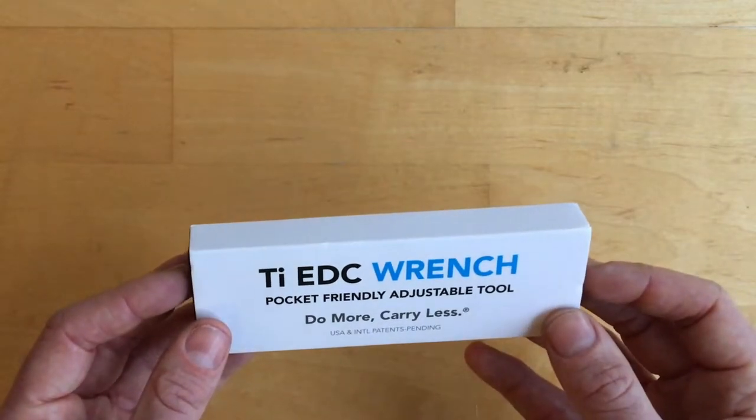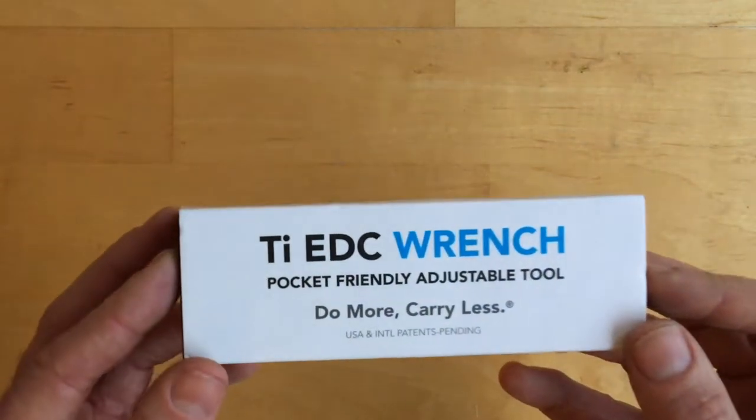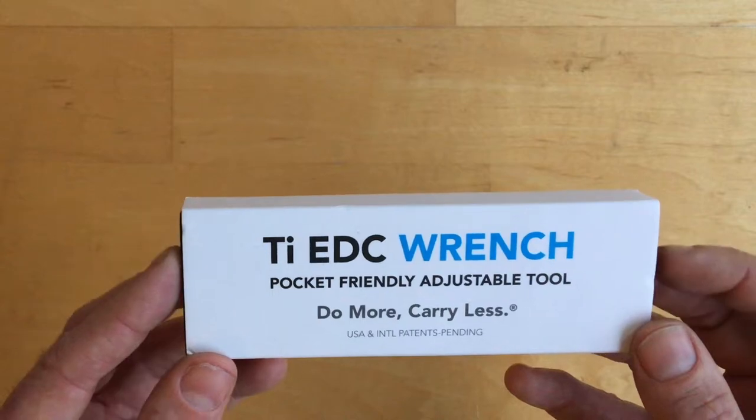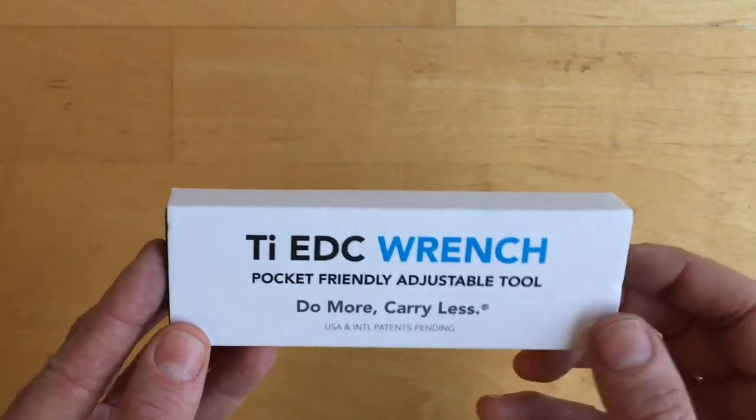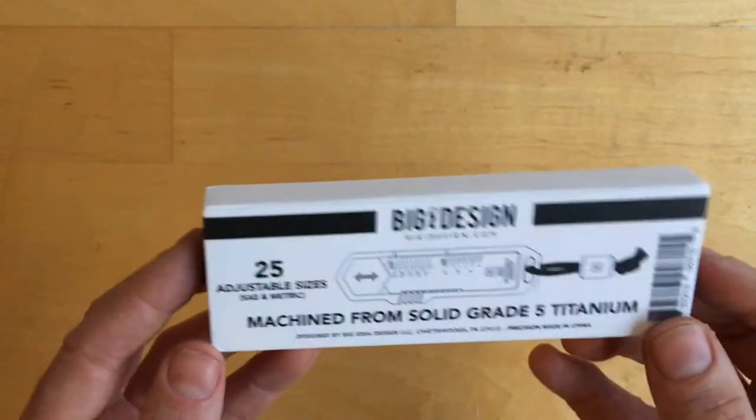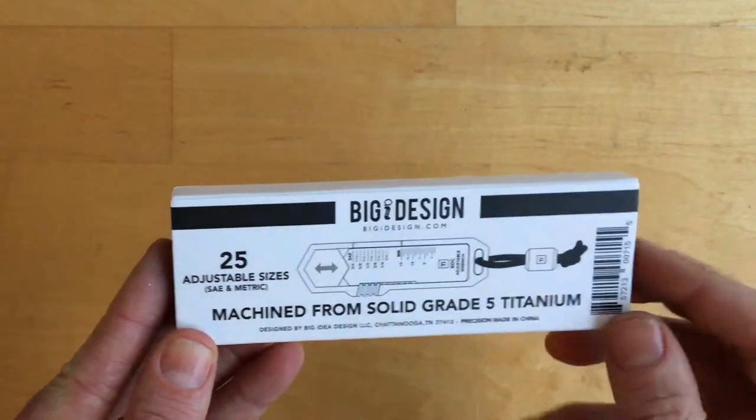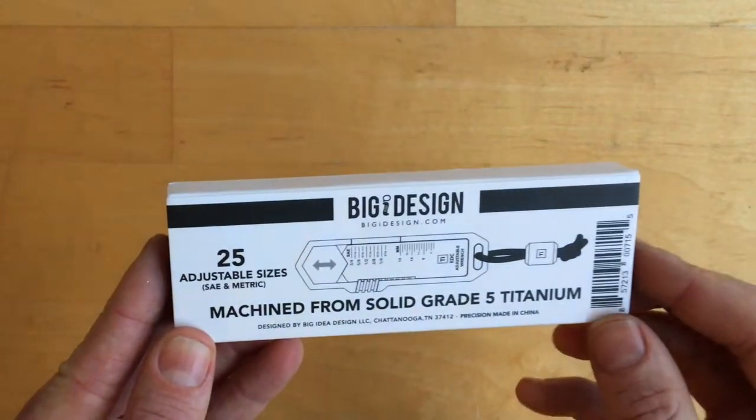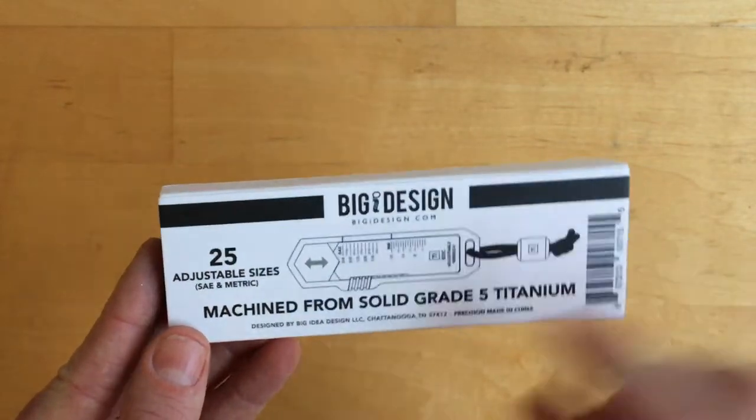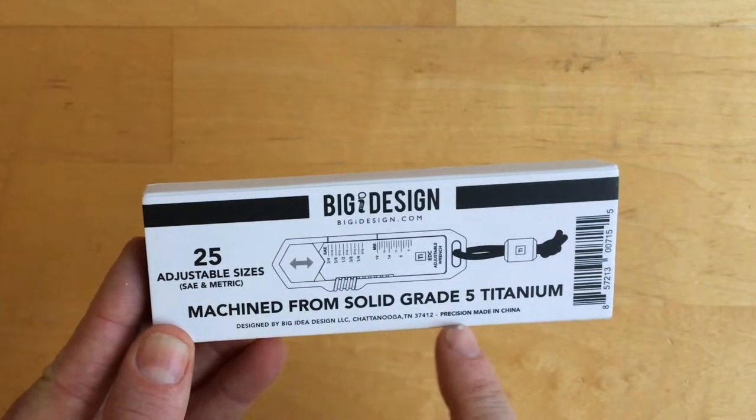This doesn't really tell you who it's from but it tells you exactly what's in the box. On the back there's the design of the product that you're going to see on the inside. There's their logo Big Eye, Big Eye Design, machined from solid grade five titanium.